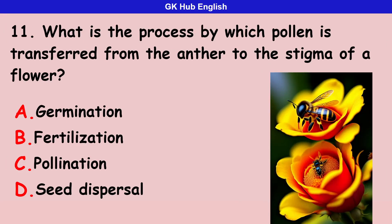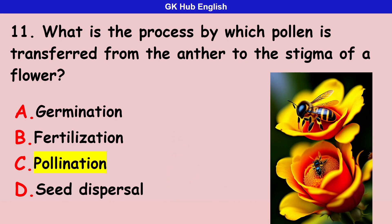Eleventh question: what is the process by which pollen is transferred from the anther to the stigma of a flower? Option A is germination. Option B is fertilization. Option C is pollination. Option D is seed dispersal. Correct answer is pollination.